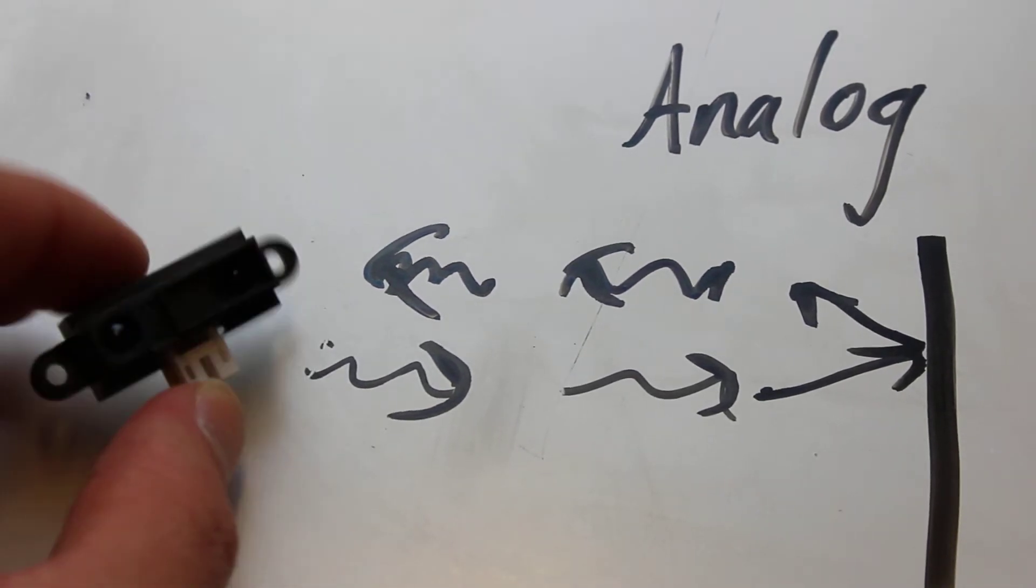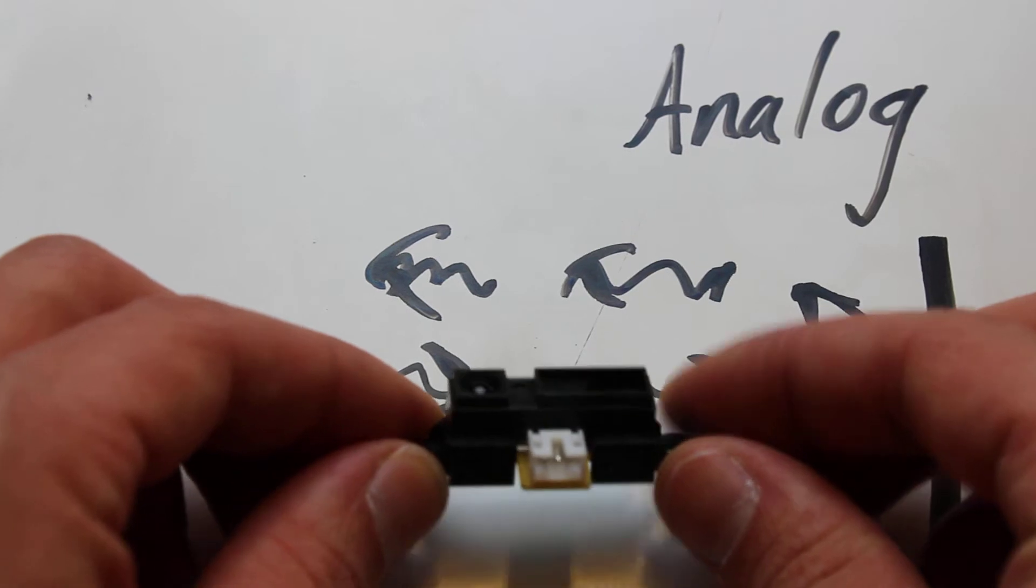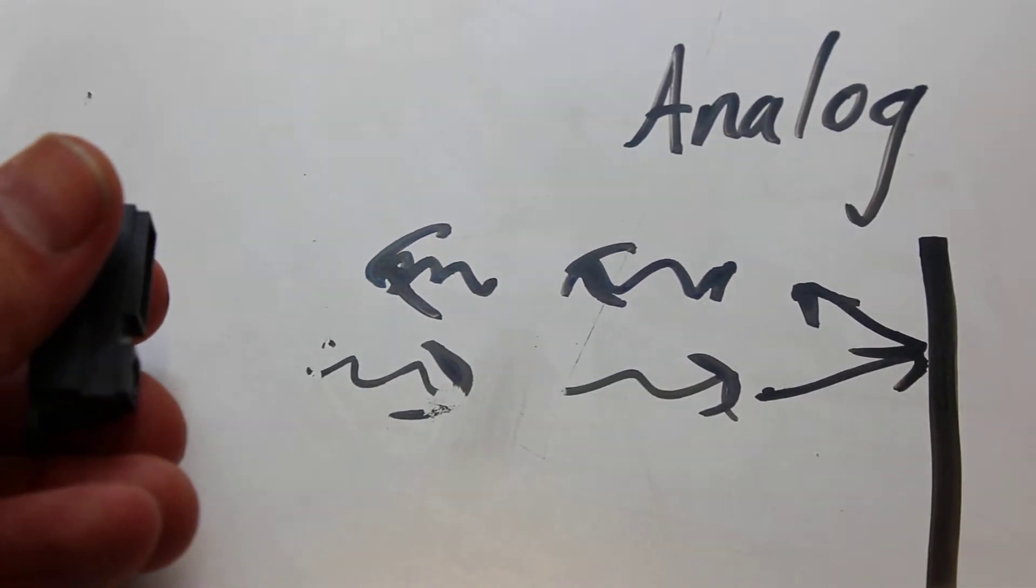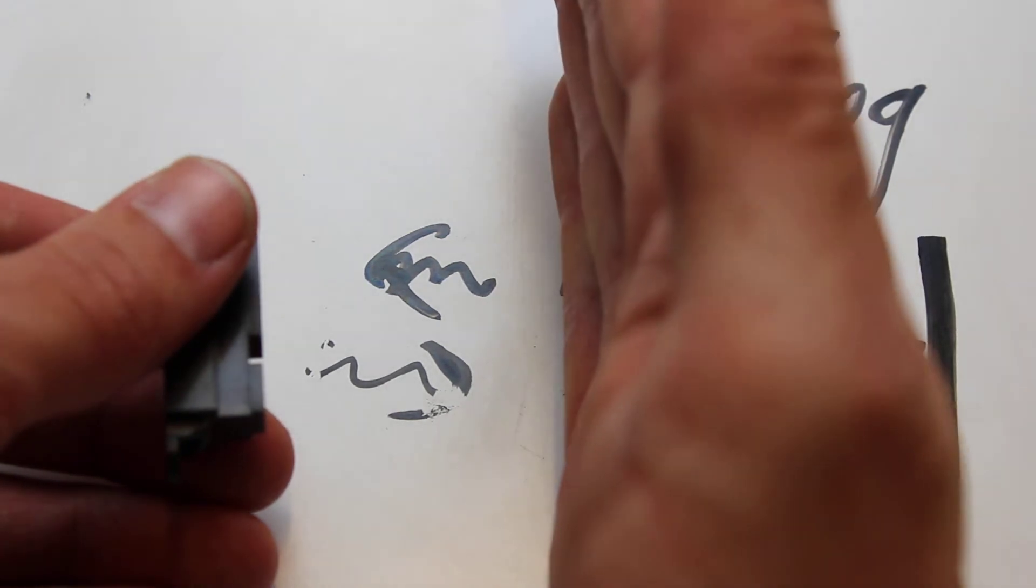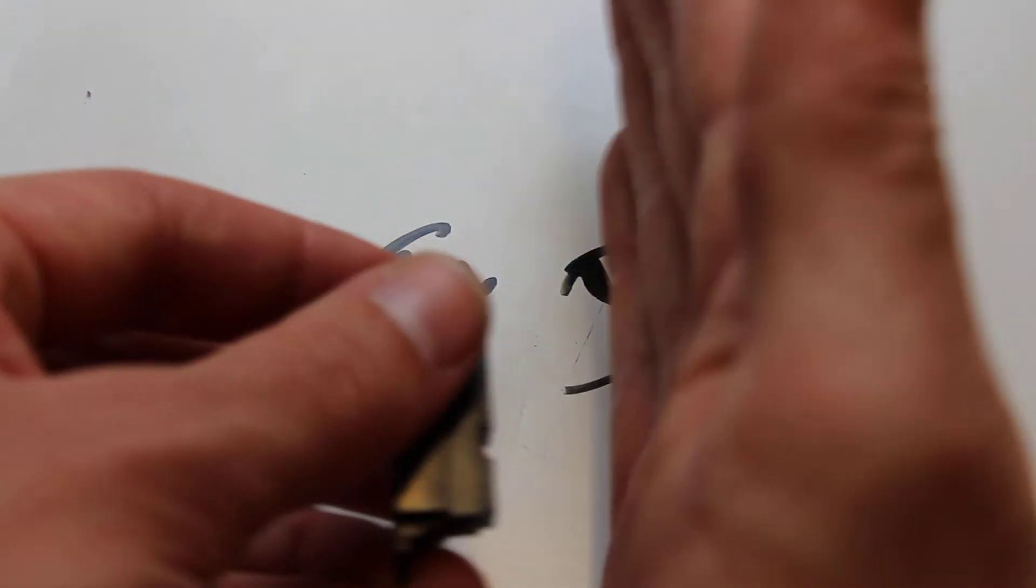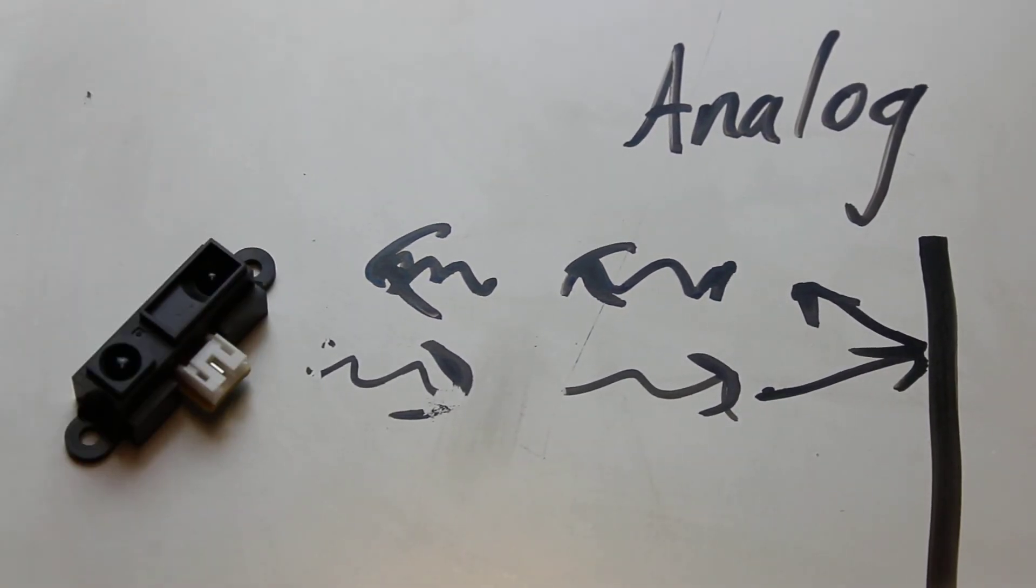So they're very good for wall following and that kind of thing, as opposed to the cheaper distance sensor where the sensor doesn't give you anything until it turns on and sends a digital signal. These don't do that. These are always telling you some distance. And that is the analog infrared sensor.